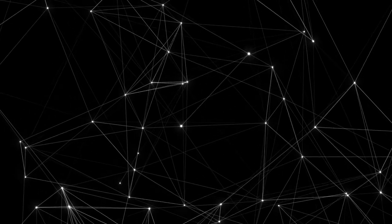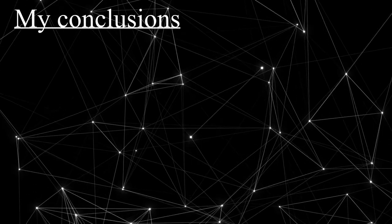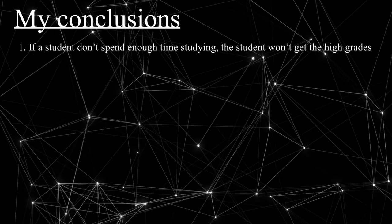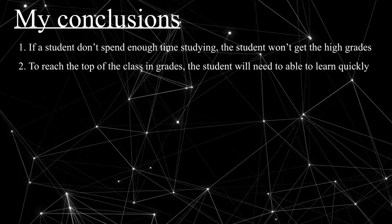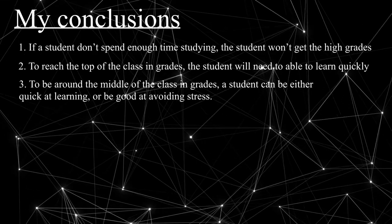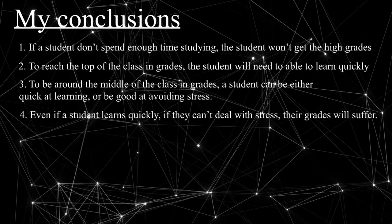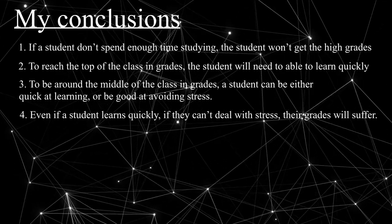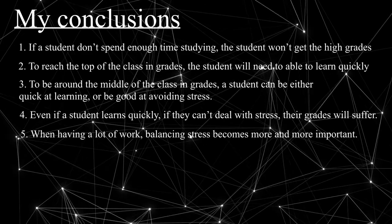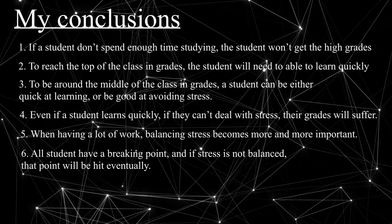So to summarize what I conclude from these graphs — bearing in mind this will be generalized a lot: First, if a student doesn't spend enough time studying, they won't get high grades. Second, to reach the top of the class, a student needs to be able to learn quickly. Third, to be around the middle, a student can be either quick at learning or good at avoiding stress. Fourth, even if a student learns quickly, if they can't deal with stress, their grades will suffer. Fifth, when having a lot of work, balancing stress becomes more and more important. Sixth, all students have a breaking point, and if stress is not balanced, that point will be hit eventually.